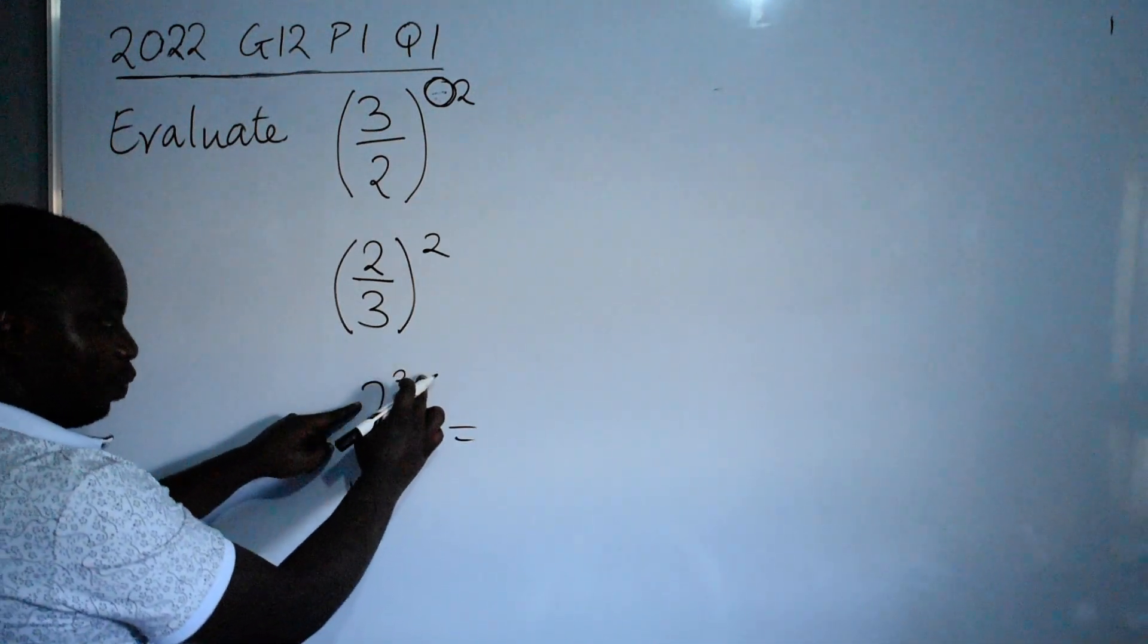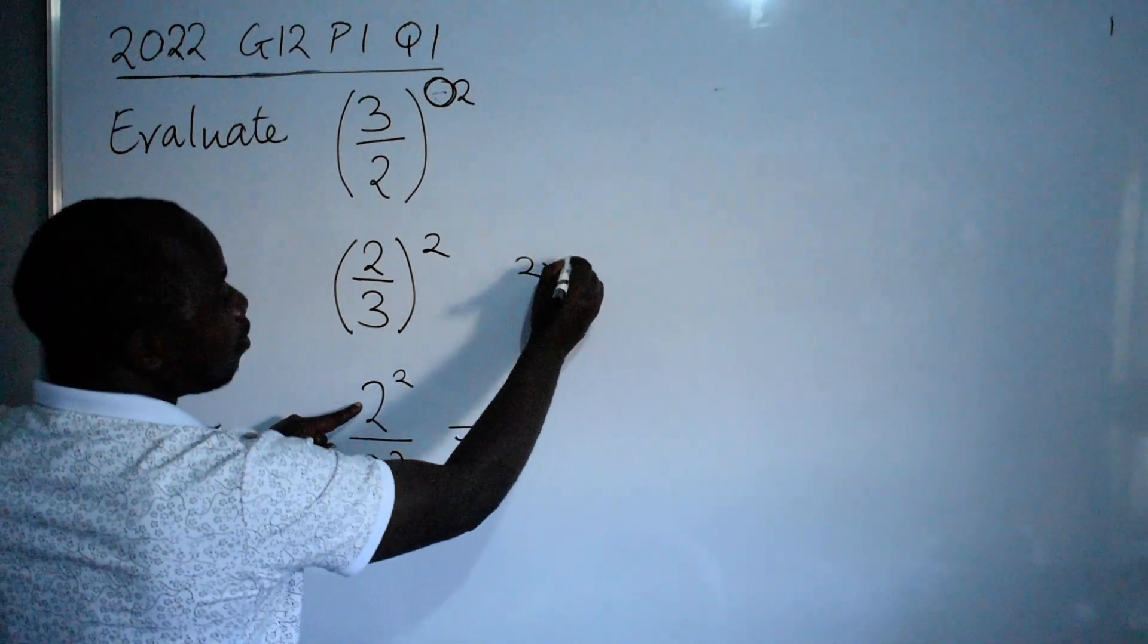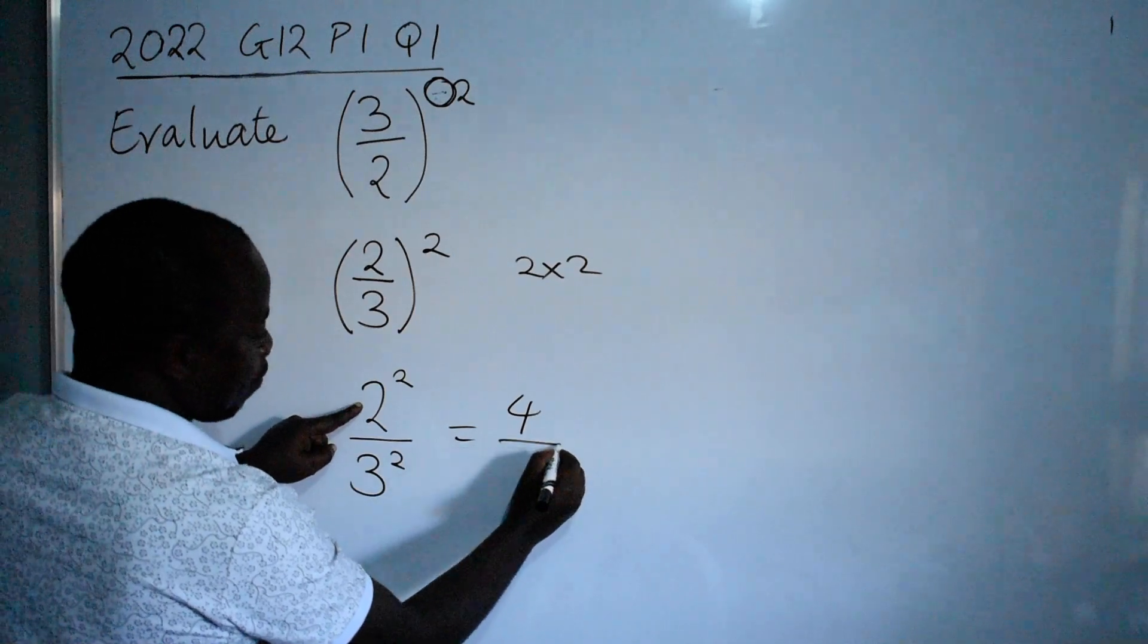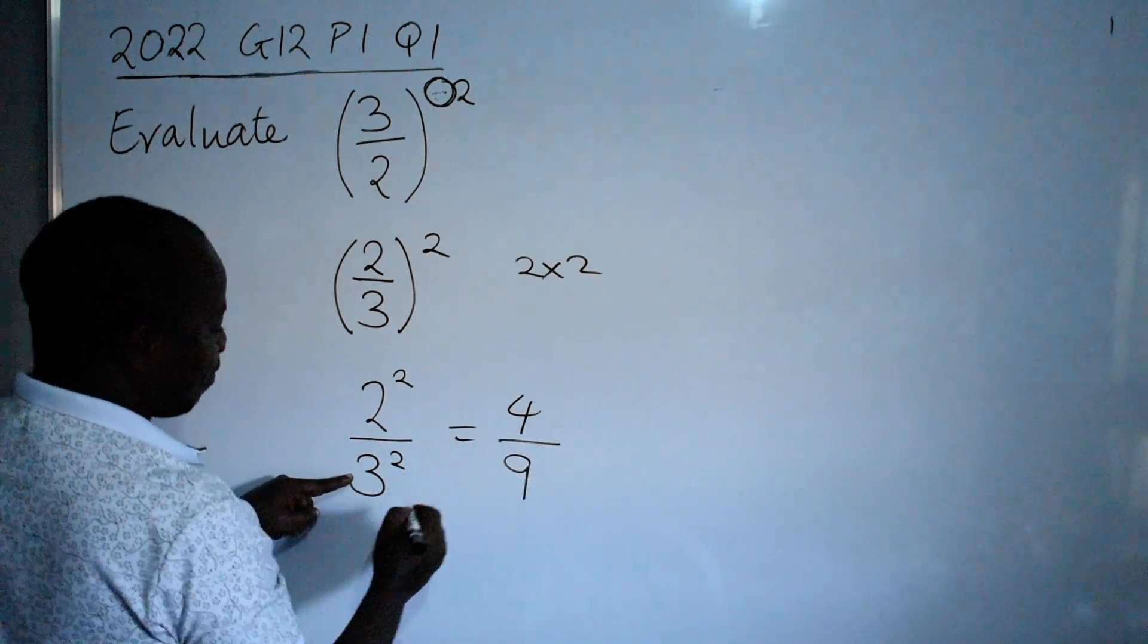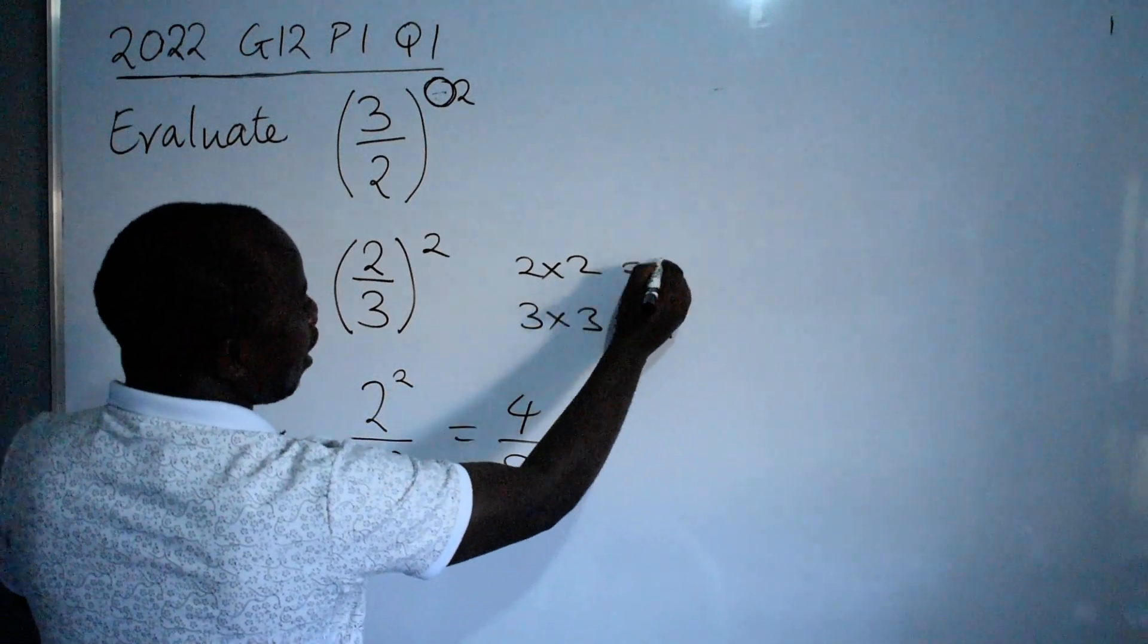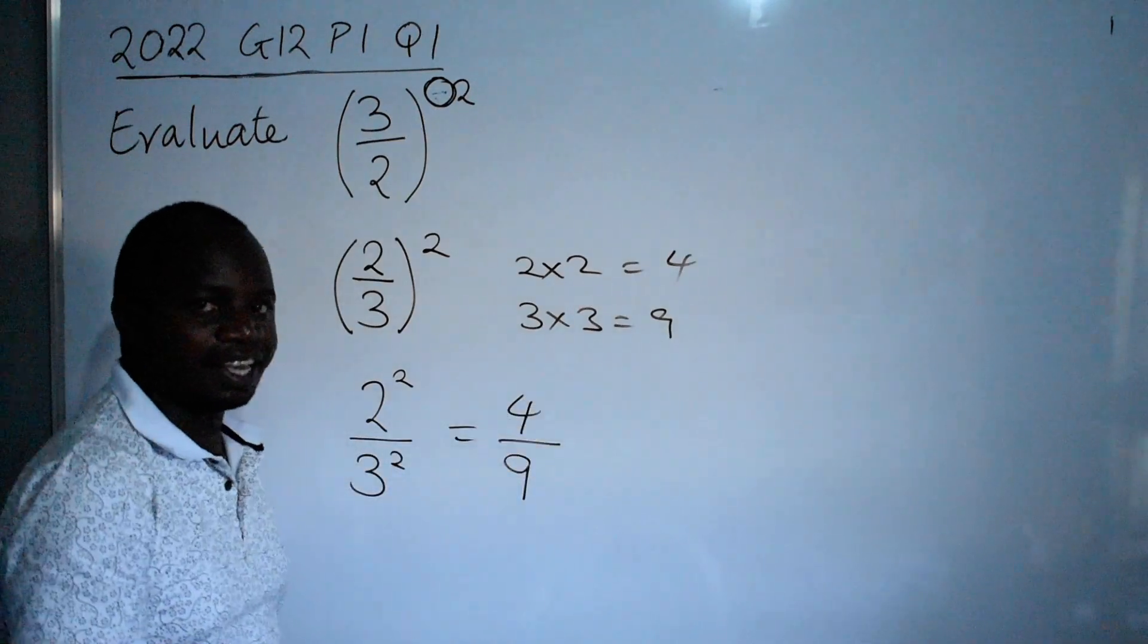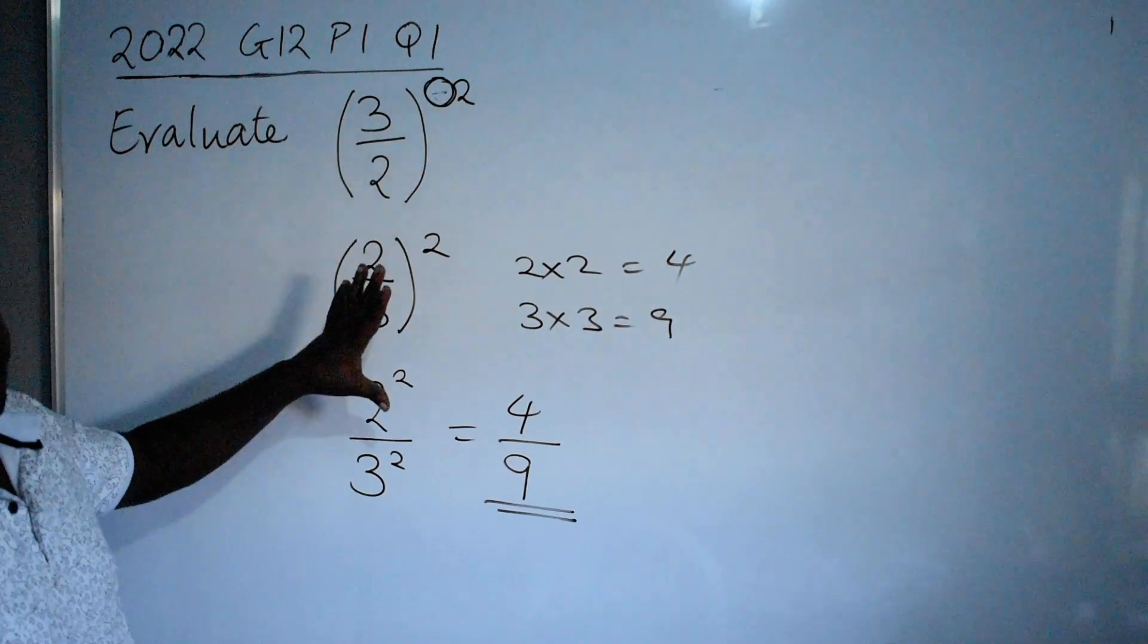2 to the power 2 is 4, because that is 2 times 2. Over 3 to the power 2 is 9, because this is 3 times 3, which is equal to 9. So we have 4 over 9. This is your final answer to this question.